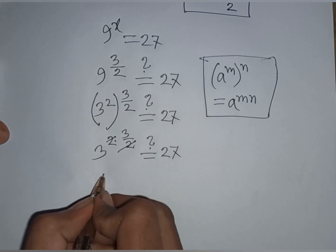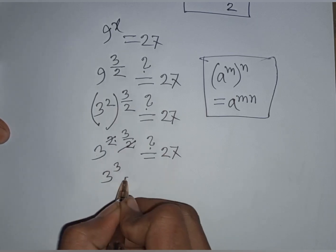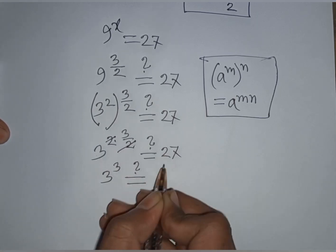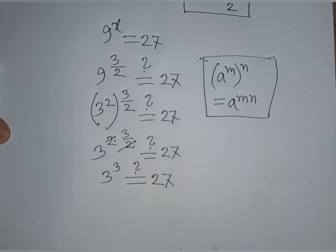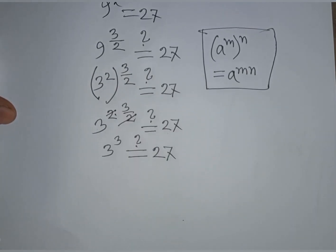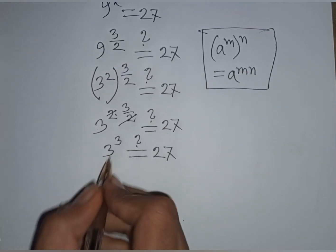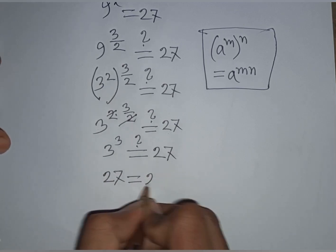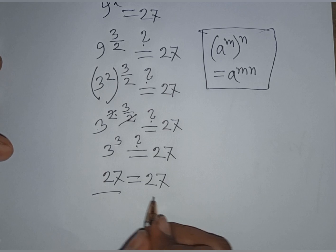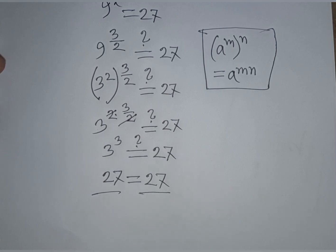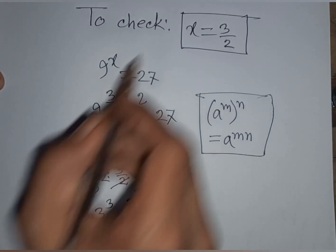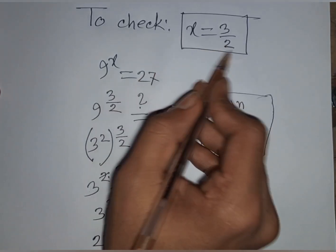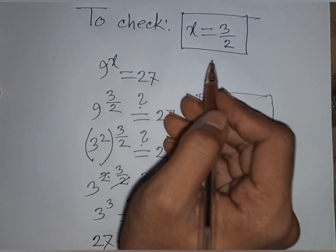So we have 3 power 3 equals 27. And 3 power 3 is indeed 27, so 27 equals 27. Left side equals right side, so our correct and final answer is x equals 3 by 2. This is justified.